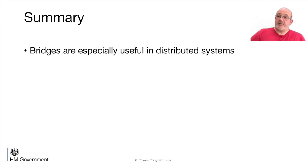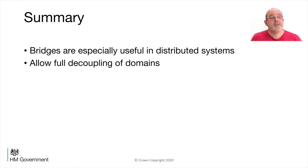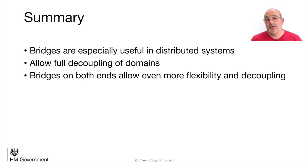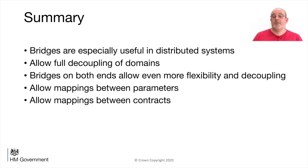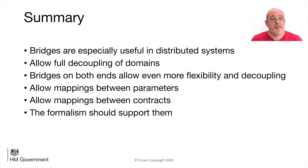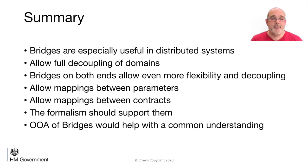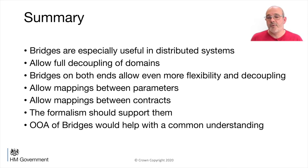In summary, bridges are especially useful in distributed systems because they allow full decoupling of domains. Adding an extra intermediate domain so we've got bridges on both ends allows even more flexibility in decoupling, and bridges allow mapping between different parameters, types, unit conversions, and also allow mappings between contracts. The current formalism doesn't really support them and we think it should - doing an object action for bridges would help with a common understanding. We're at the point now where we're trying to decide how we define our bridge mappings, and having a formalism and an OA of bridges would really help with locking that down. Thank you.